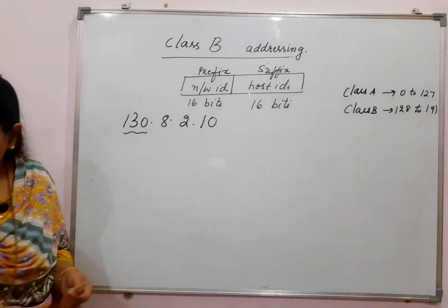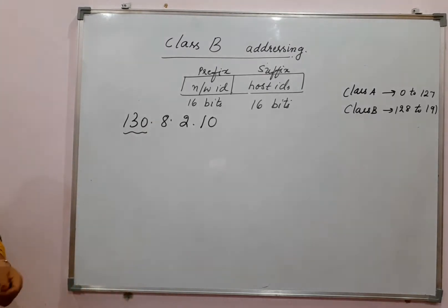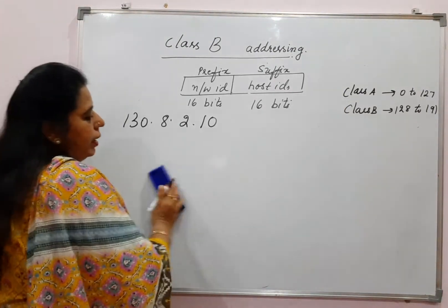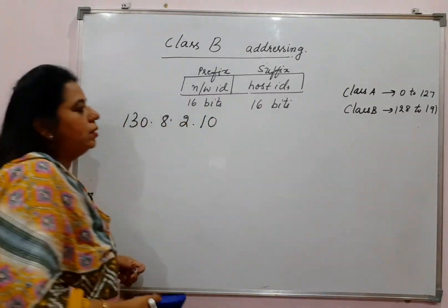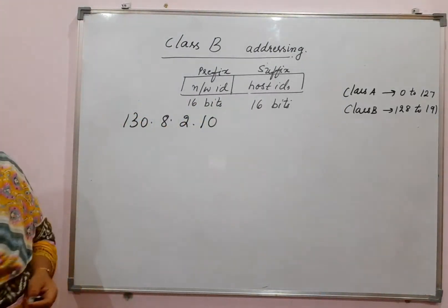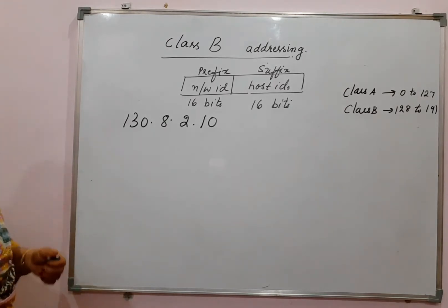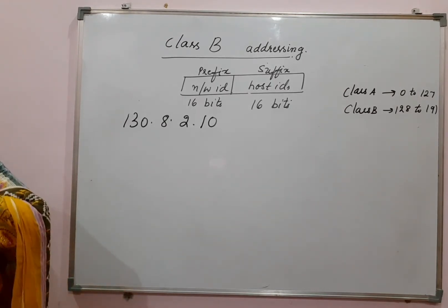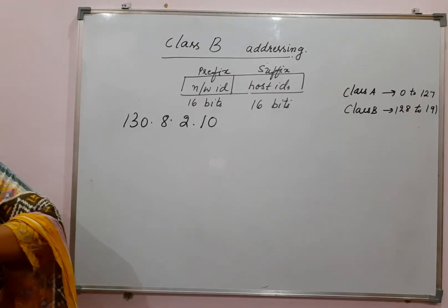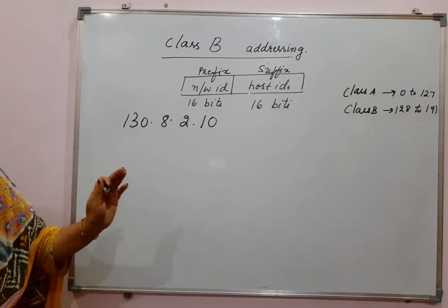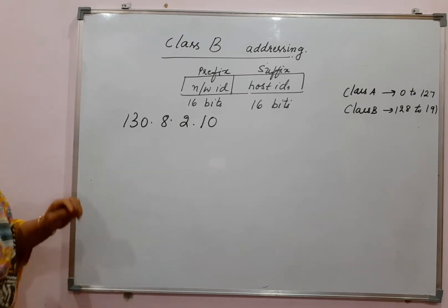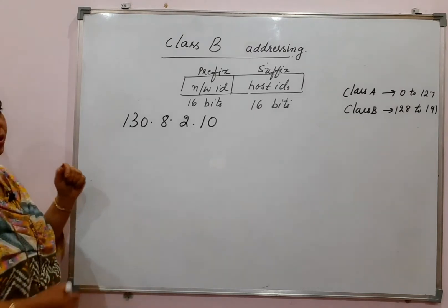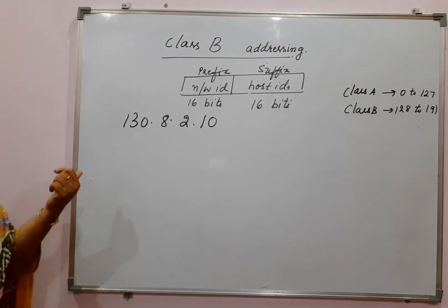For this given IP address, we are going to determine the first address and the last address. The same logic is used here — you are going to write down the first byte mentioned in the IP address, which is 130, in binary notation.